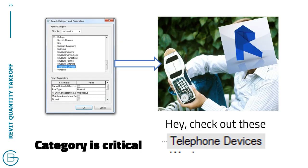Making things the right category is also really important. I find sometimes people don't really have a strategy for what category a family should be in Revit, and a company should always have their own principle. For example, what does a TV belong to? Is it electrical equipment? Is it specialty equipment? Obviously it's not casework. These decisions need to be made pretty early when you're building a content library.